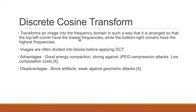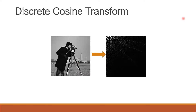Next is DCT. It transforms an image into the frequency domain, arranged such that the top left has low frequencies and the bottom right has high frequencies. Images are often divided into blocks before applying DCT. The advantages are good energy compaction and strong resistance against JPEG compression attacks, as well as low computation cost. The disadvantages are block artifacts, as well as weakness against geometric attacks. As can be seen in the representation, the top left has low frequencies while the bottom right has the high frequency values.